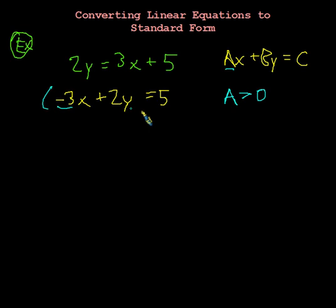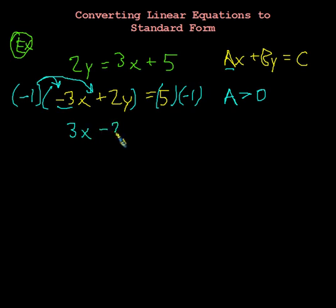So one thing that we can do to correct that is we'll multiply both sides of the equation by a negative 1. And we have to multiply everything on both sides of the equation by negative 1. So we'll distribute this guy to here and to there. And so that gets us positive 3x minus 2y equals negative 5.